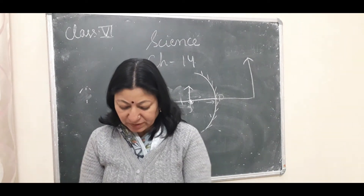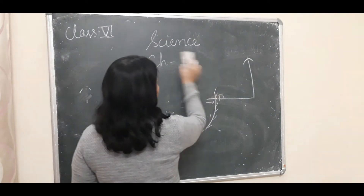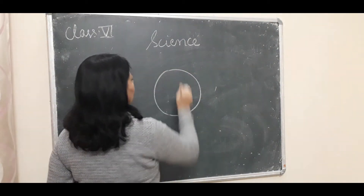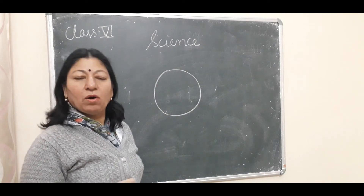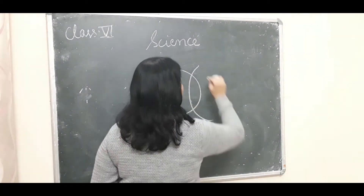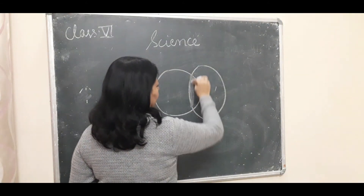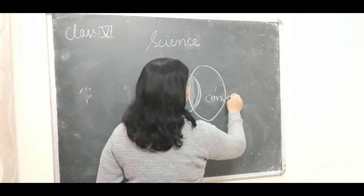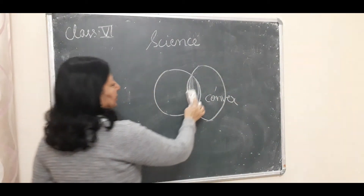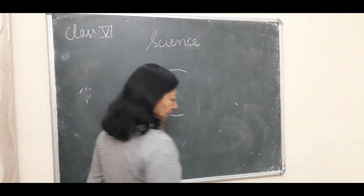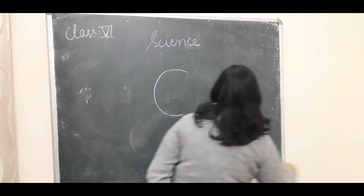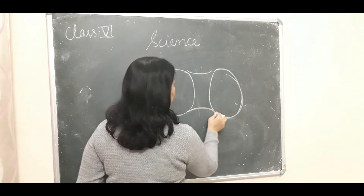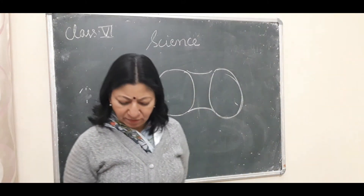Next is the lens. A lens is a spherical transparent object. A convex lens is formed by joining two spherical surfaces outward. A concave lens is formed by joining two spherical surfaces inward, creating a thinner middle portion.